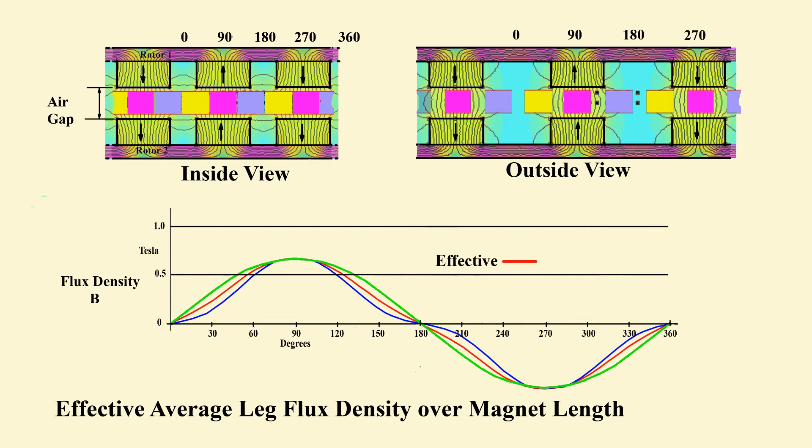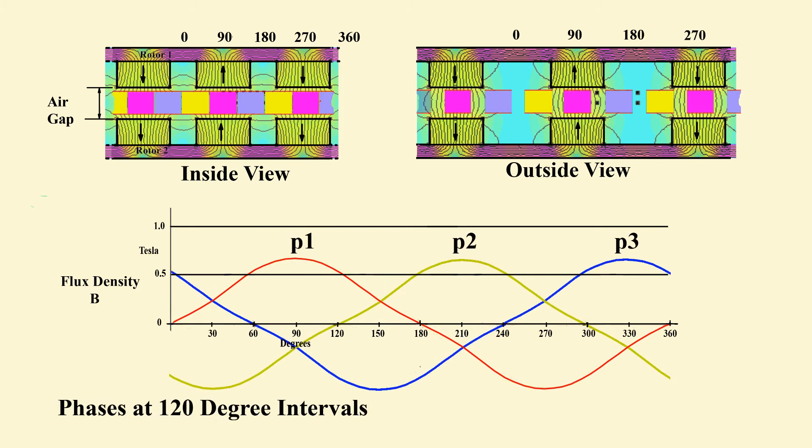According to flux cutting rules, the average voltage developed on all wires in a coil leg will be proportional to the height of this curve. Effective values for all three phases will be as shown here.